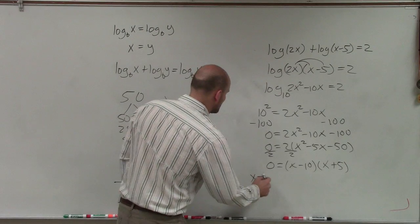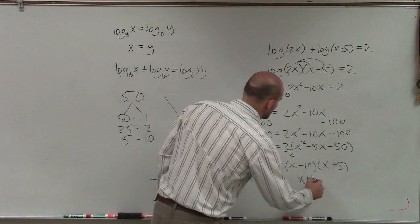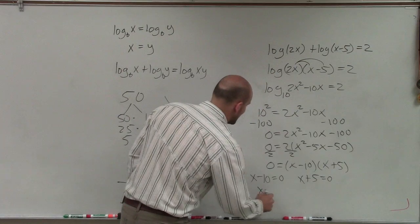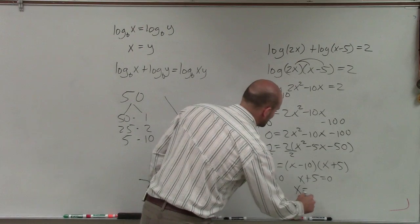Then, using my zero product property, I can set these both equal to zero. Therefore, x equals 10 and x equals negative 5.